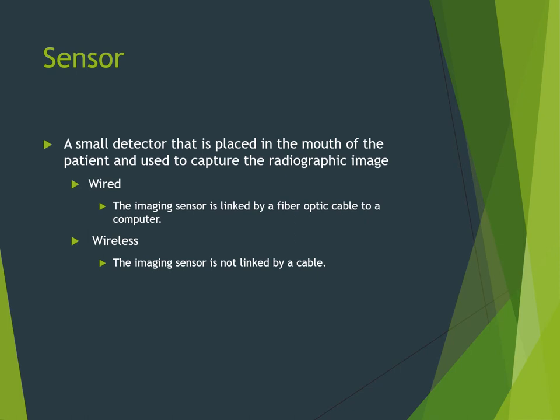The sensor is a small detector placed into the patient's mouth — it's what captures the radiographic image and replaces the film. There are wired sensors with a fiber optic cable, which is the kind used in our clinic, and wireless ones too. Wireless sensors look similar to wired ones except instead of a cable they have a little battery pack — they're a bit bigger and bulkier, but you're not tied down by the wire. They send the image to the computer via Wi-Fi.